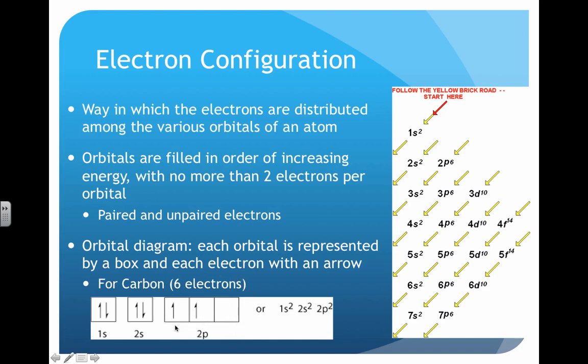We'll talk more about the ramifications of having a partially filled set of orbitals later. An alternative way is using what we call a complete configuration, a more shorthand version.